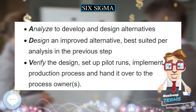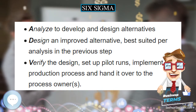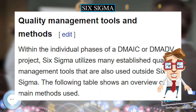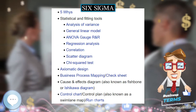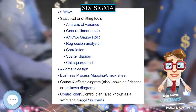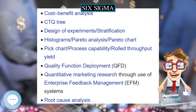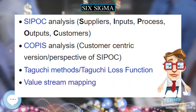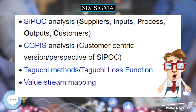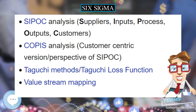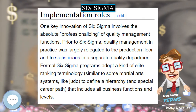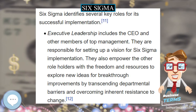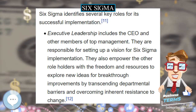The term Six Sigma Process comes from the notion that if one has six standard deviations between the process mean and the nearest specification limit, practically no items will fail to meet specifications. This is based on the calculation method employed in process capability studies. Capability studies measure the number of standard deviations between the process mean and the nearest specification limit in sigma units, represented by the Greek letter sigma (σ).